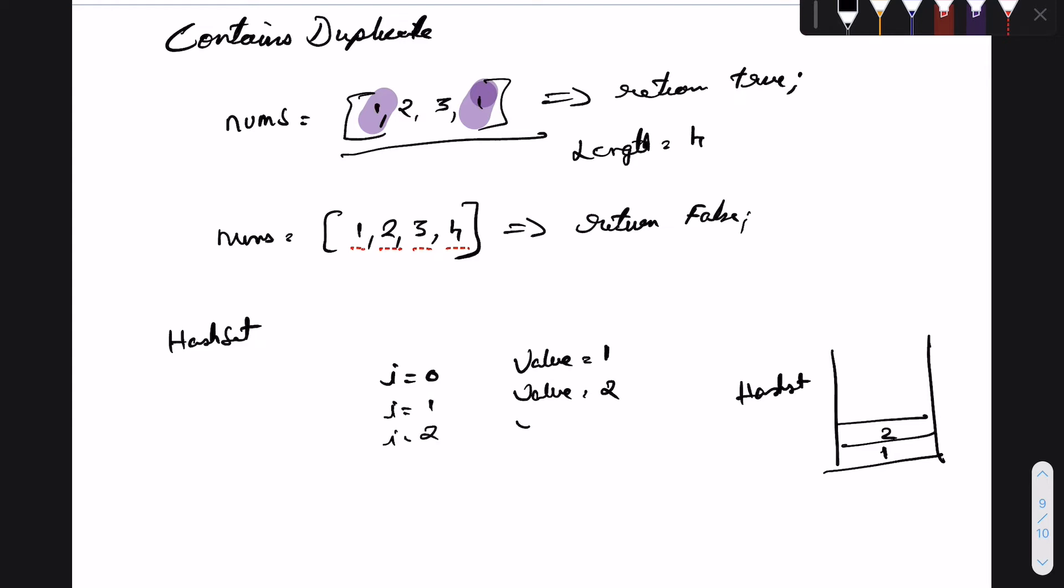We move on to the next iteration where the index would be 2 and the value would be 3. We perform the same check, and since it's not present, we keep adding it to the hash set and we reach the final index which is 4.